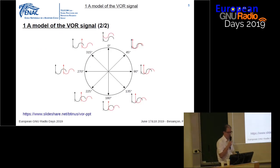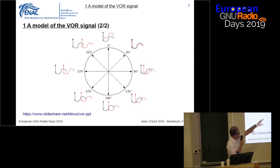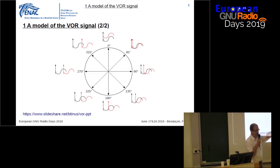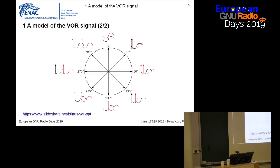I have a graphical illustration here. You can imagine that at the center you have the beacon, and your aircraft is in some direction. For example, take the 145-degree direction. You have two 30 Hz components which are shifted by this angle when received on board. In this way, the pilot knows that it is at this angle from the beacon.